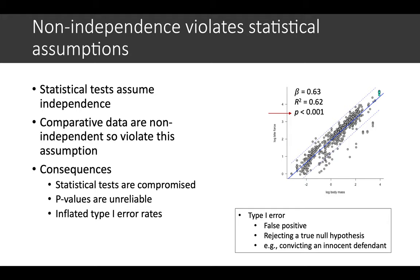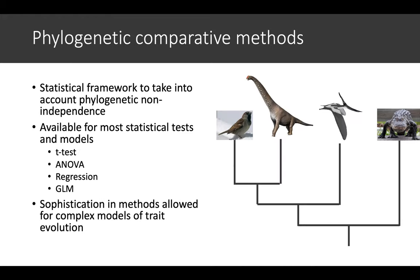So there's a suite of analytical methods called phylogenetic comparative methods that are available as a statistical framework to take into account phylogenetic non-independence.